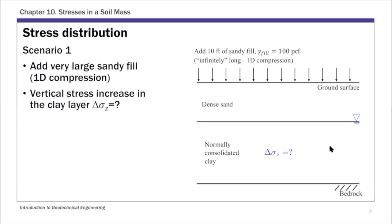To explain what stress distribution is, I'm listing two scenarios. This is the first scenario, which you probably have seen in Chapter 11 when we were doing the consolidation calculation. We have a dense sand layer on top of NC clay, and we're going to put 10 feet of a very large sandy fill on top, with a unit weight of 100 pounds per cubic foot. Since this is an infinite sandy fill, that's 1D compression. The stress increase Delta Sigma Z is simply the weight of that 10 feet of sandy fill. That's scenario one — pretty simple.